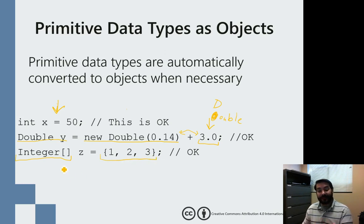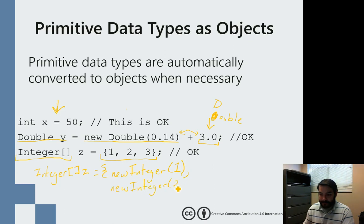And this is no different than me saying integer z equals new integer one, new integer two, new integer, that's a terrible three, three.